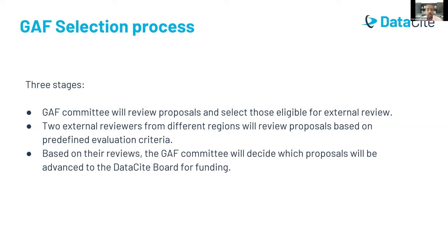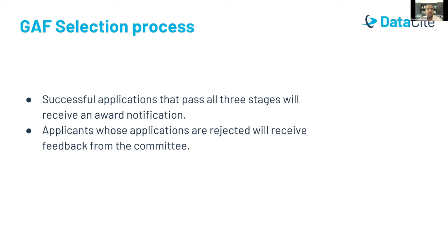Once external reviewers complete their reviews, they send feedback back to the GAF committee. Based on that feedback, the committee selects proposals to send forward to the DataSite board members for voting and granting of funds. Successful applicants are then notified, and applicants who were not successful are also notified and receive feedback from the committee, which will hopefully be helpful for future rounds.